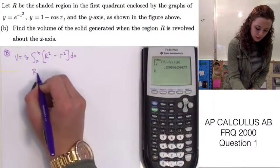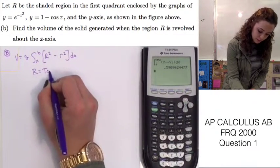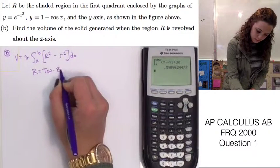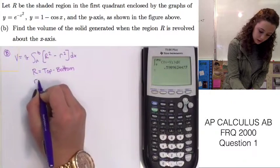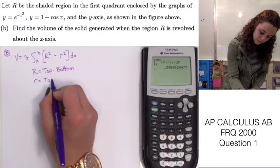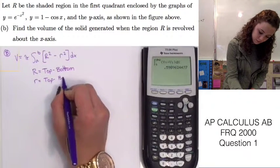We know that big R is equal to the top function minus the bottom function, and little r is equal to top function minus bottom function.